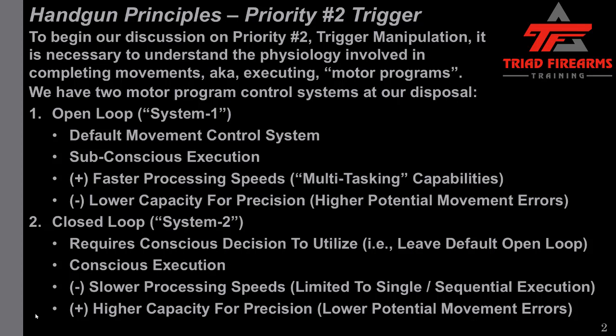The second system is closed loop, also known as System 2. This requires a conscious decision to utilize — to leave the default open loop subconscious mechanism takes a conscious decision. This is conscious execution of movement. The downside is slower processing speeds; the conscious mind can only complete one task at a time, even in a sequential mode of execution. The upside is a higher capacity for precision in movement, meaning lower potential movement errors.